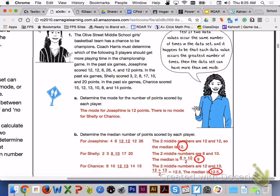For letter B, the median for Josephine is 12. For Shelly, the median is 9, and for Shanice, the median is 12 and a half.